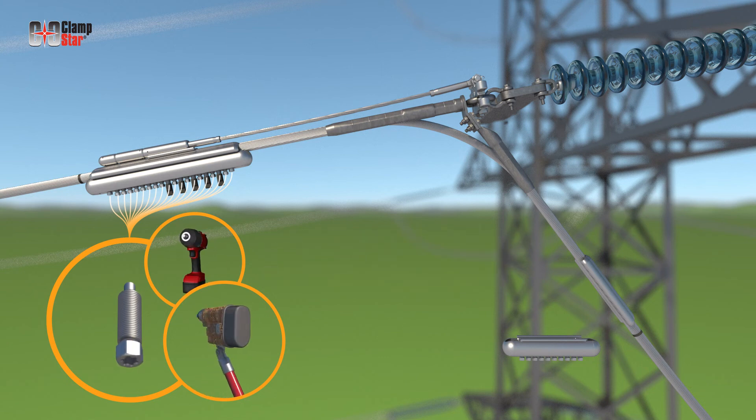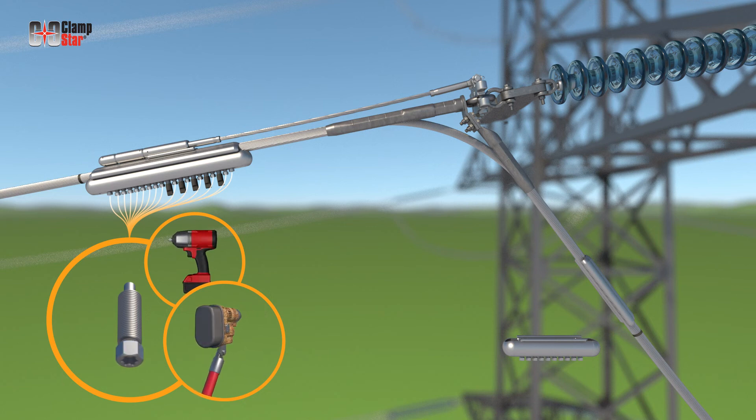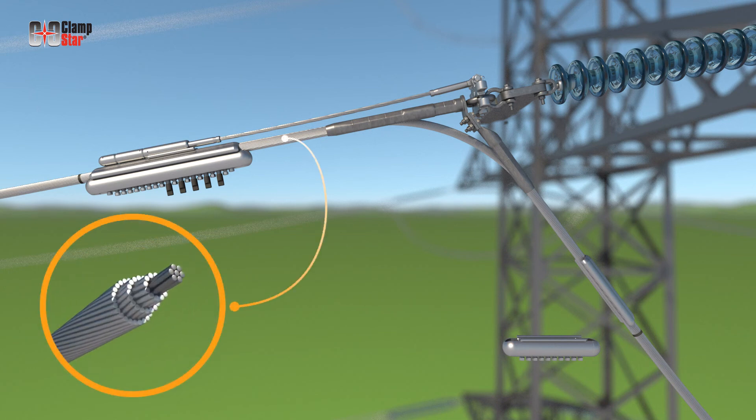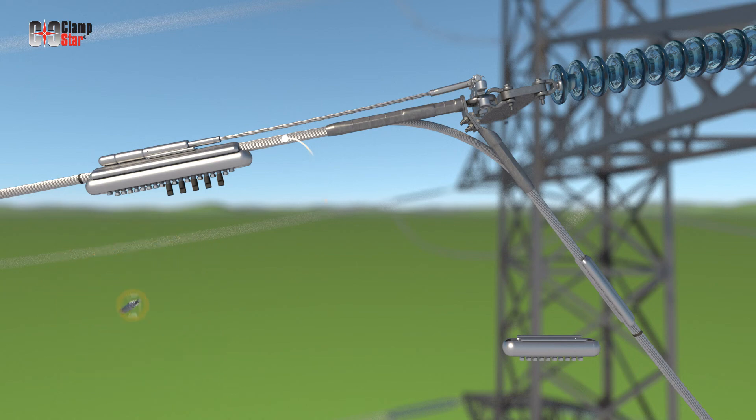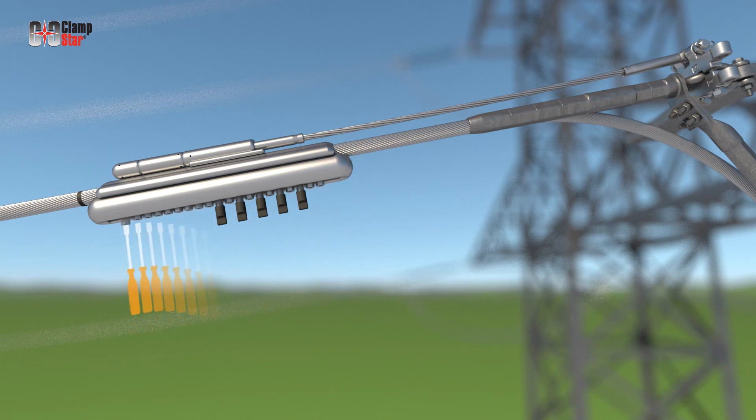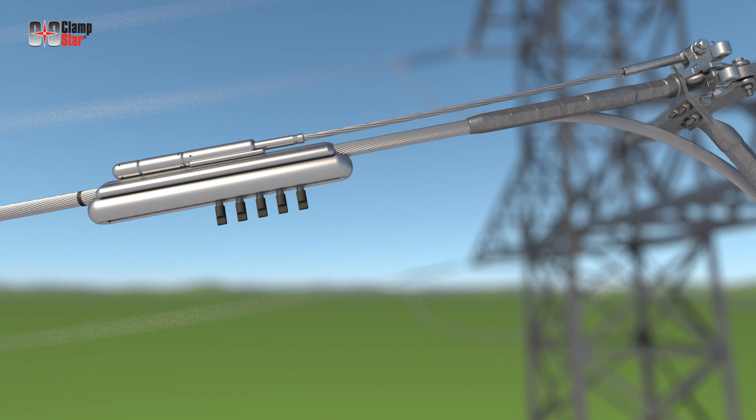For full tension units, the standard bolts all tighten in multiple passes until the head shears off. Then the full tension keepers are tightened to shear in a single pass. Beginning at the outermost fastener, tighten the standard bolts in a linear fashion equivalent to the number of layers of aluminum stranding over the core. For example, assume a conductor has three layers of aluminum stranding over seven steel core strands. Apply torque to each bolt in succession two times, with the third application of torque continuing until the head snaps off.